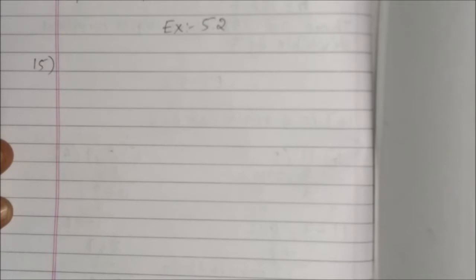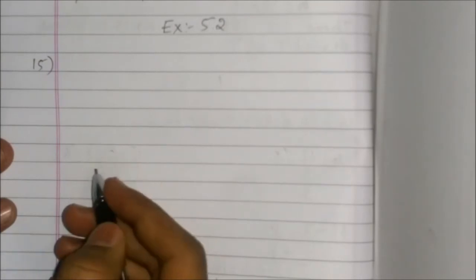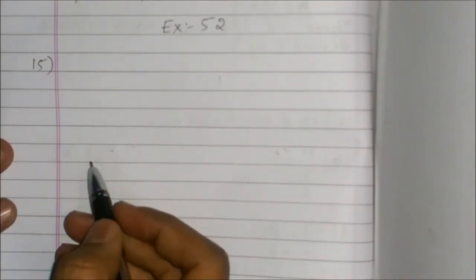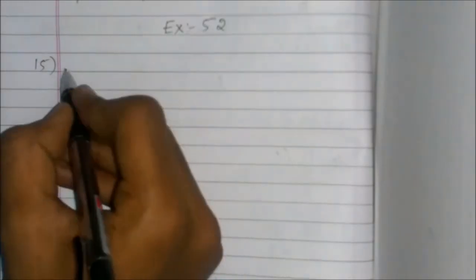Exercise 5.2, 15th question. Here the question is: for what value of n are the nth terms of two APs, 63, 65, 67 and 3, 10, 17, equal? Here they are telling that there is an nth term where both the APs will get equal numbers.